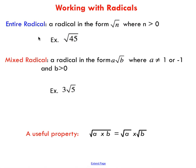So just a couple definitions for you. Working with radicals: an entire radical is the term given to an expression that just involves a square root where the number under the square root is greater than zero. So for example, the square root of 45 — we would call that an entire radical. We don't use that word entire too often, we just call it a radical.